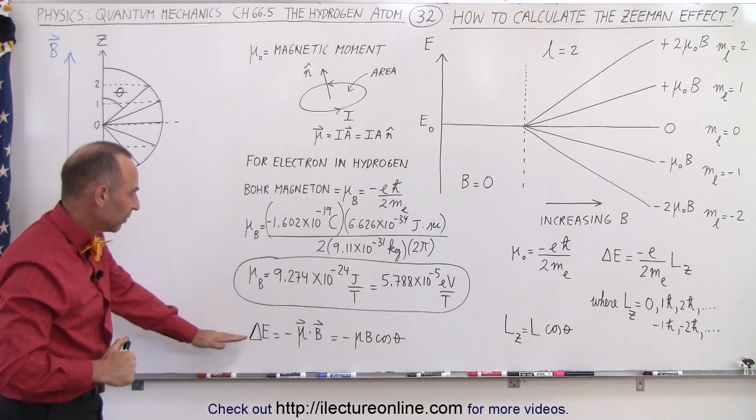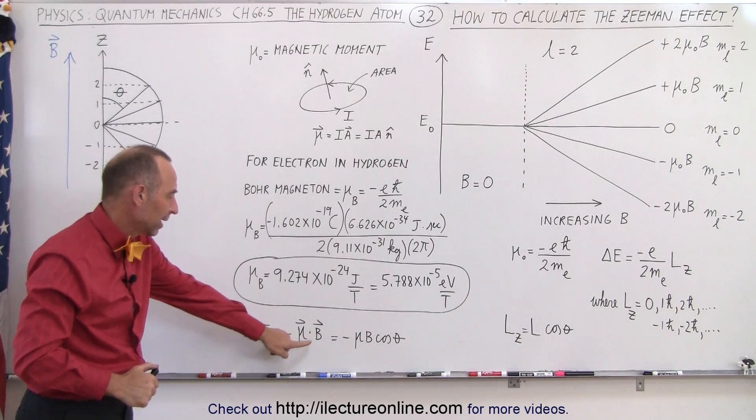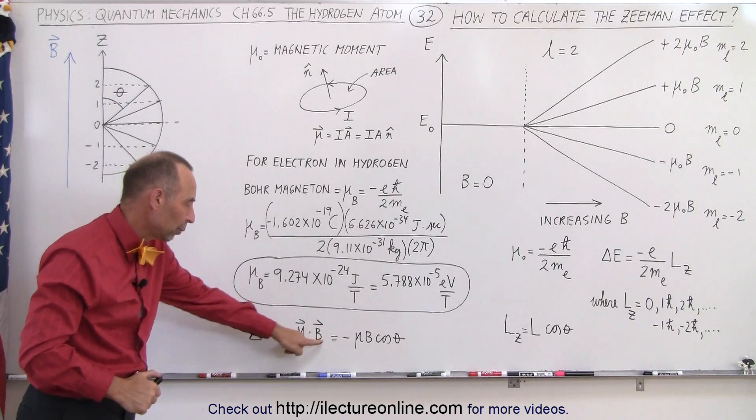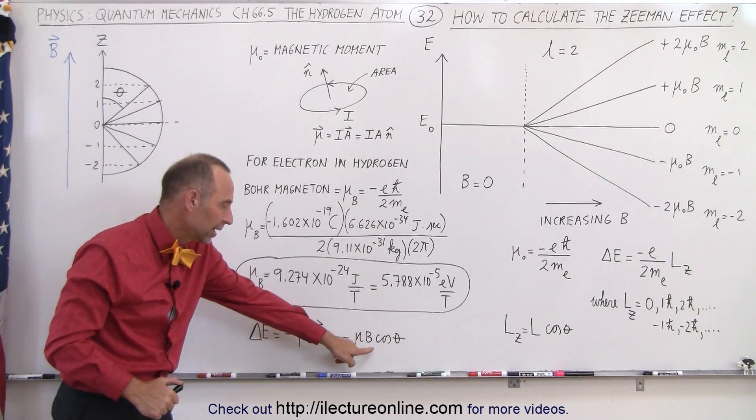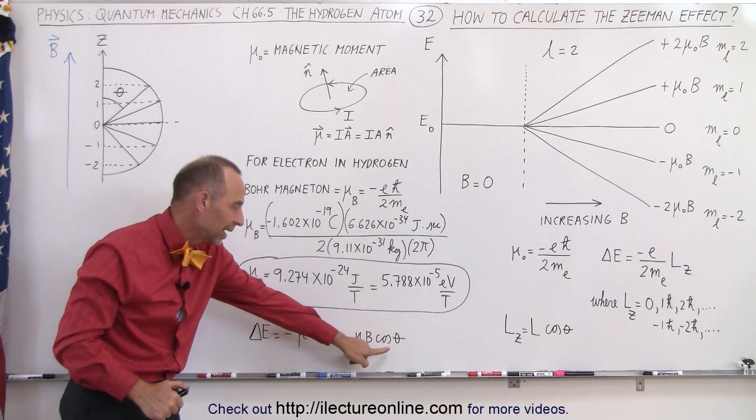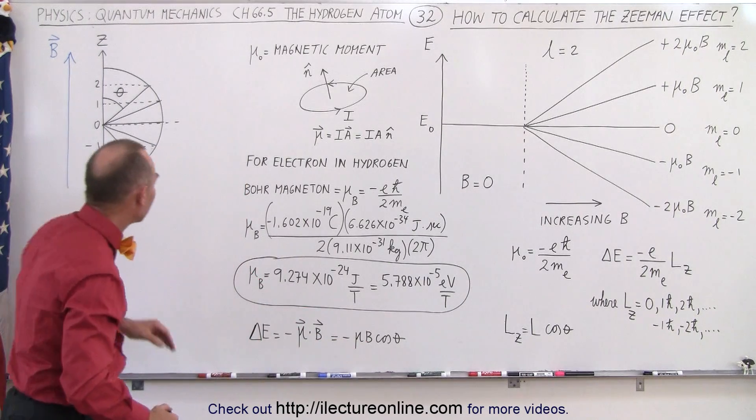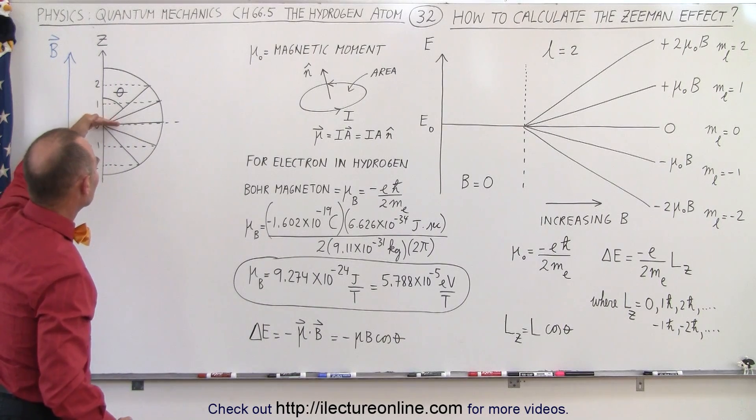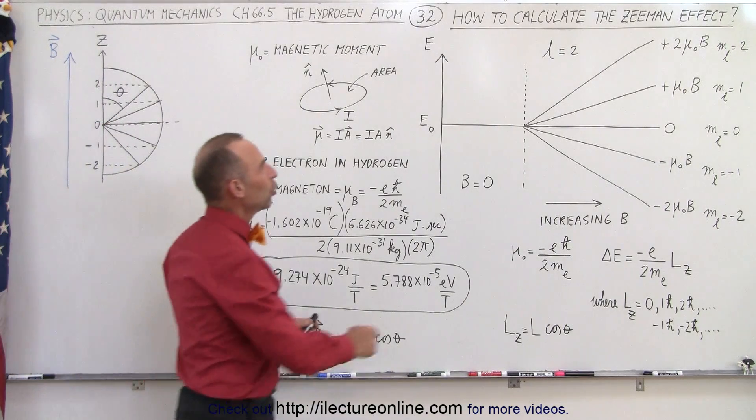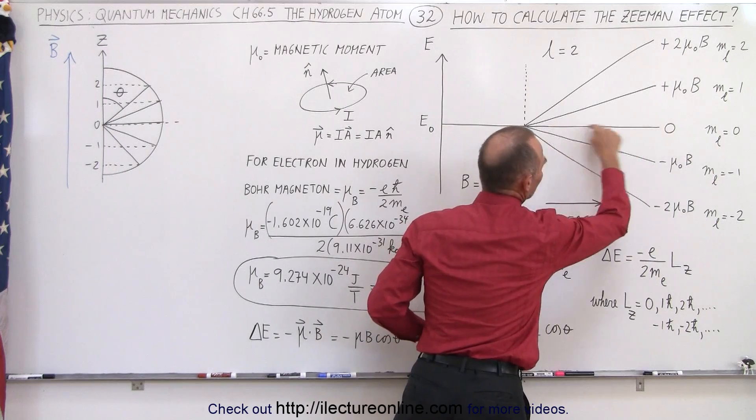The difference in the energy is equal to the Bohr magneton times the strength of the electric field. When you do the dot product, it's the strength of the Bohr magneton times the strength of the magnetic field times the cosine of the angle between them. If the angle is 90 degrees, then the cosine of 90 is zero, and then you have no change in the energy level, that's this one right here.